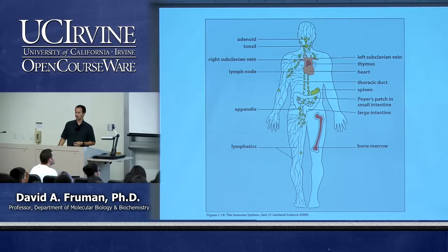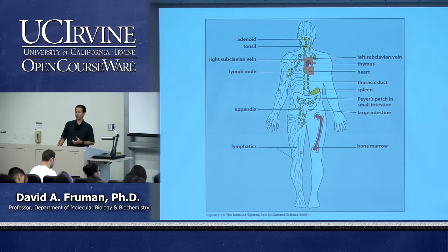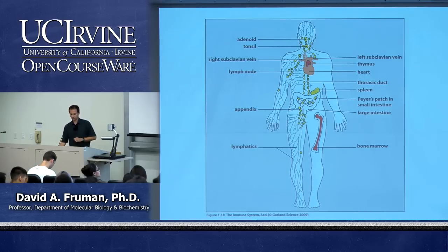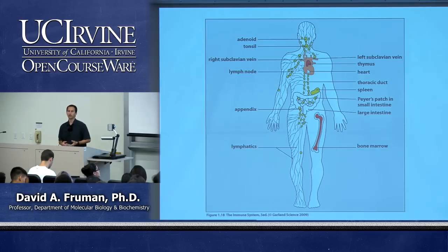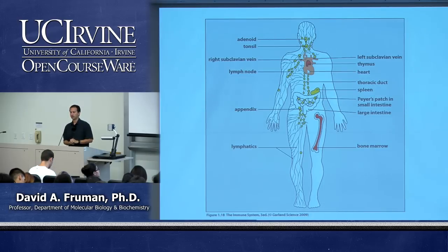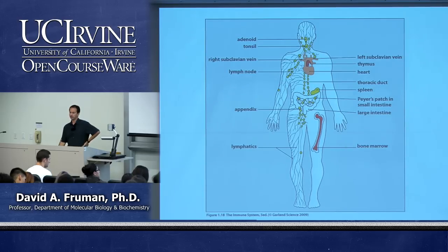At the step where the common lymphoid progenitor branches to the NK/T cell precursor, the cells leave the bone marrow and take up residence in the thymus. This is where T cells mature and undergo selection — a process that removes self-reactive T cells before they can damage the host. We'll learn a lot about selection later, understanding why it's important to remove the bad ones and select the good ones. A T cell undergoing development in the thymus is known as a thymocyte.